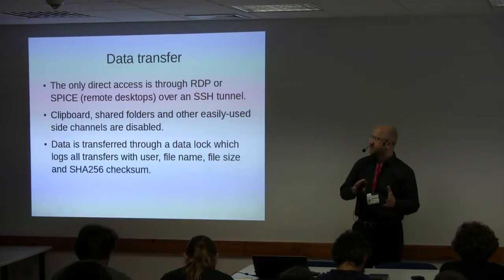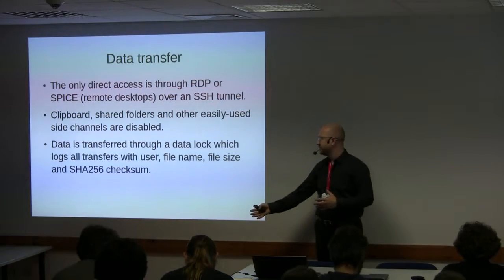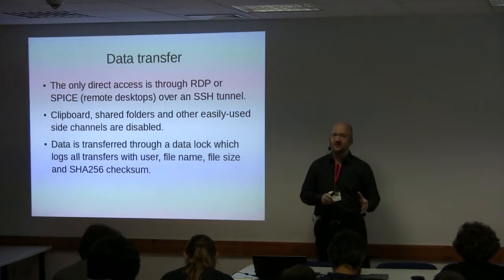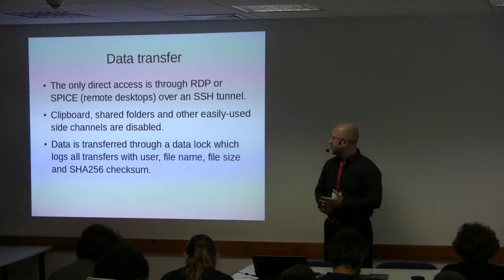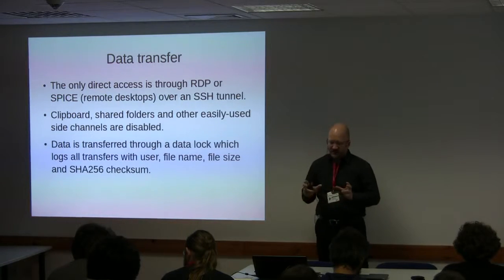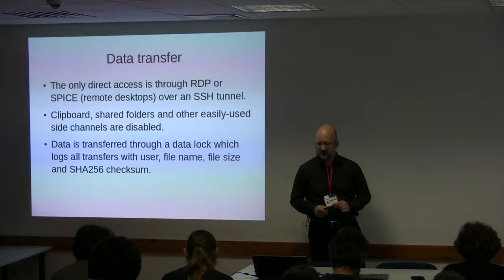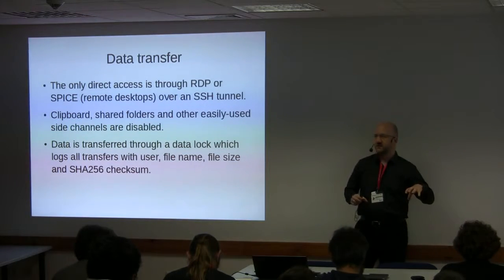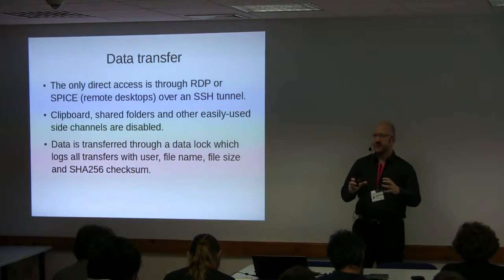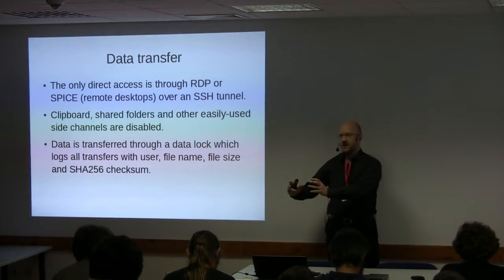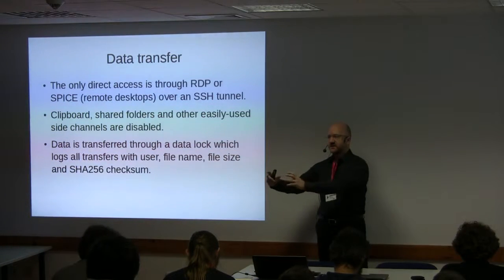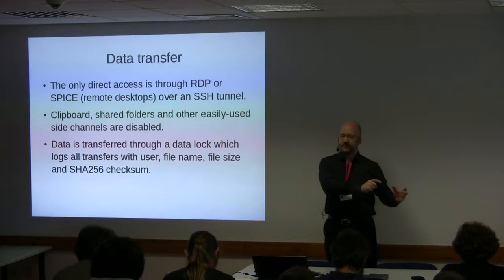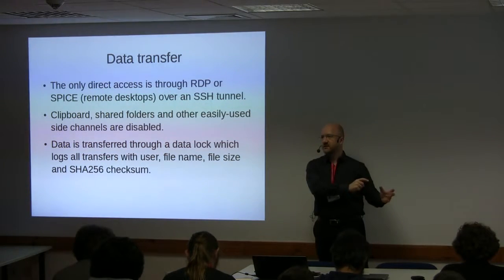When data has to be transferred into the system, or results transferred out, we use what we call a data lock — in the same sense as an air lock or a lock on a river — which is a pair of machines where the outward-facing machine is an SFTP server. Data can be deposited there and will be copied into the system. Likewise, users within the system can move data into a specific area of storage from where it will be copied to the SFTP server, and they can download it from there.